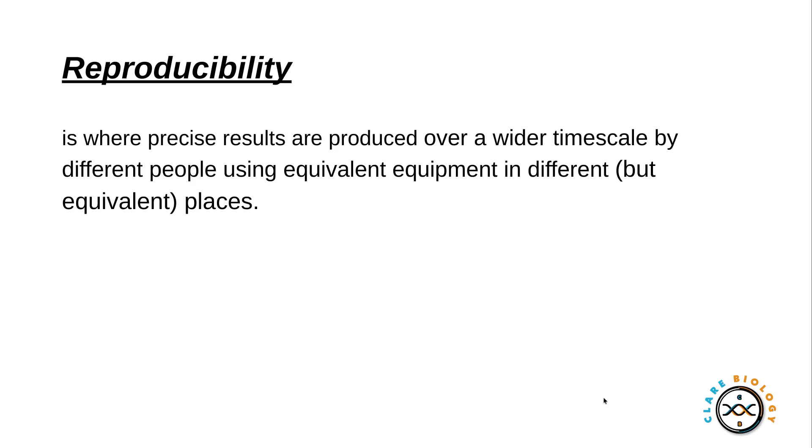Reproducibility. This is where we get precise results that are produced over a wider timescale, but this time we're using different people. So it's about having a really good method that different people can follow so that you get the similar results each time. So if they ask you to improve a method to improve the reproducibility, you're looking to see what further information you need so that other people can repeat this experiment and get the same results.